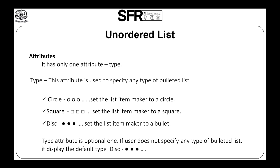Now let us see the attributes of Unordered List. It has only one attribute, that is Type. The Type Attribute is used to specify any type of bulleted list. It can be classified into three categories: Circle, which sets the list item marker to a circle; Square, which sets the list item marker to a square; and Disc, which sets the list item marker to a bullet. The Type Attribute is optional; if not specified, it displays the default type, disc, which sets the list item marker to a bullet.